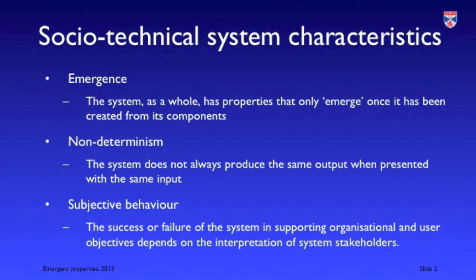There are three types of characteristics of socio-technical systems that are particularly important. One is emergent properties, which are properties of a system that only become apparent when you put the system together. Another is non-determinism, which means the system will not always react in the same way when presented with the same input. And the third is subjective behaviour, where the effectiveness of the system in supporting organisational and personal goals depends on the interpretation of the user or stakeholder.